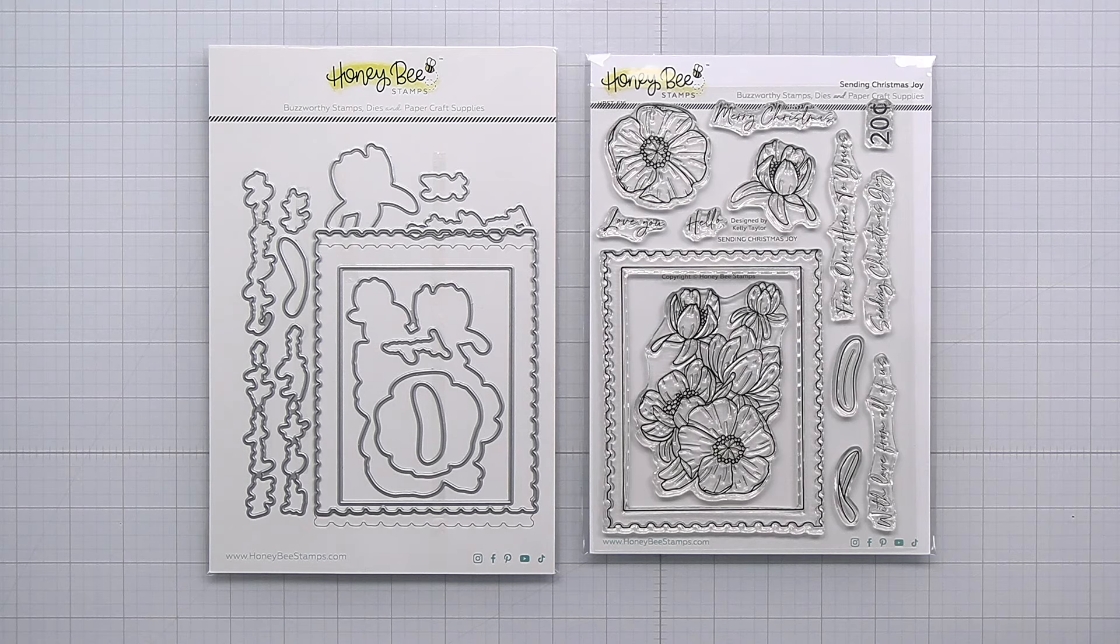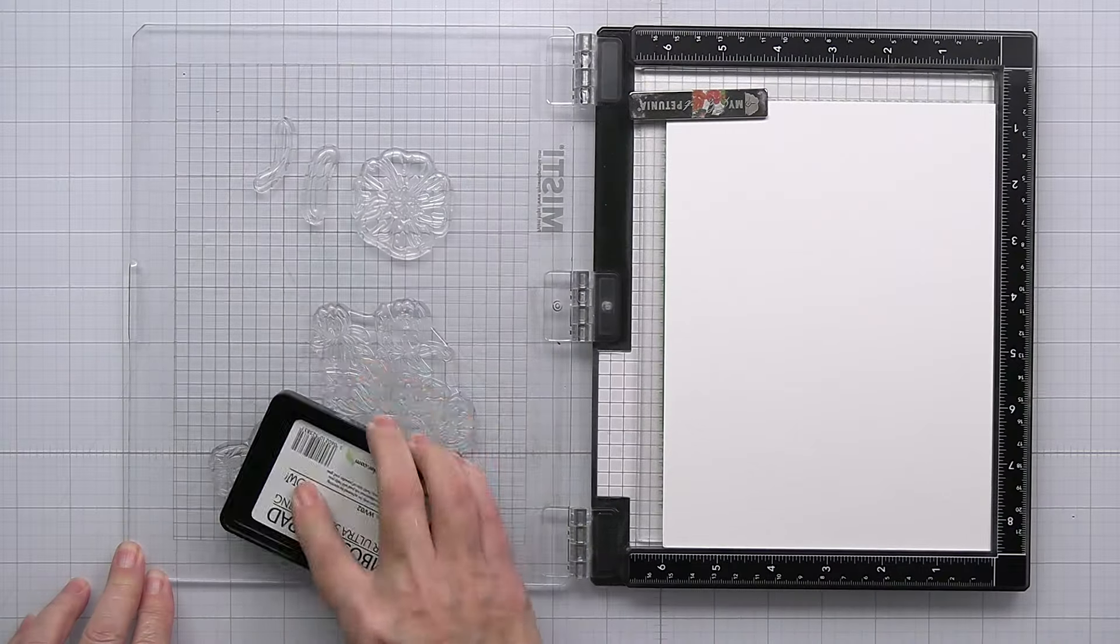We've got that gorgeous stamp set on the right which is stunning and of course the coordinating die on the left. This was designed by Kelly Taylor for Honey Bee Stamps and I just love it. It is of course as always from Kelly just so gorgeous.